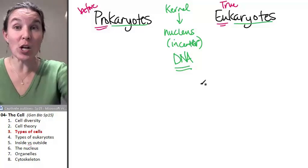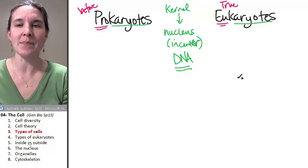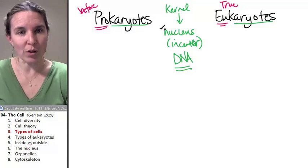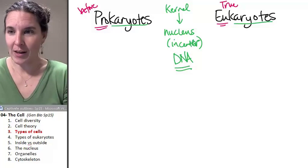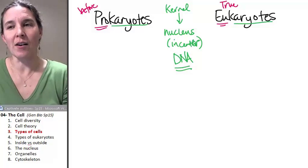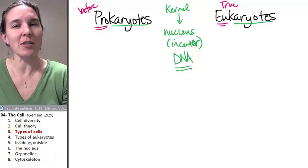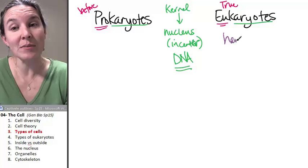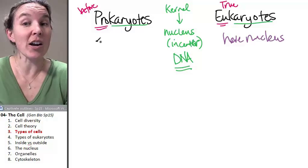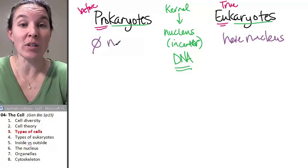But we know all cells have DNA. But in a true kernel versus a before the kernel, I don't know if that's going to help anyone at all or if it just makes it worse. Maybe I'll just tell you what it is. Eukaryotes have a nucleus and prokaryotes do not have a nucleus.